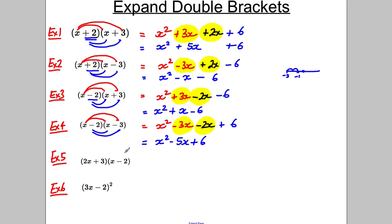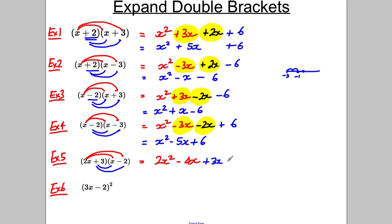Two more examples, slightly more complicated. 2x multiplied by x, 2x multiplied by negative 2, positive 3 multiplied by x, and positive 3 multiplied by negative 2. That gives 2x², negative 4x, positive 3x, and negative 6. Combining the middle terms: negative 4x plus positive 3x is negative 1x. So the result is 2x² − x − 6.